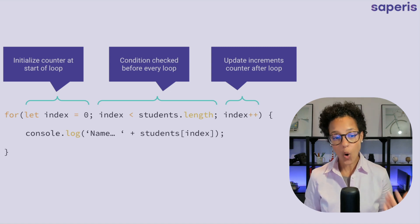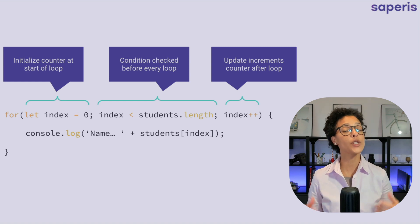Now I always write let index equals zero. What you'll often find is let i equals zero. It's up to you how you name that counter variable. I tend to call it index because it's more descriptive. It's easier for me to read.